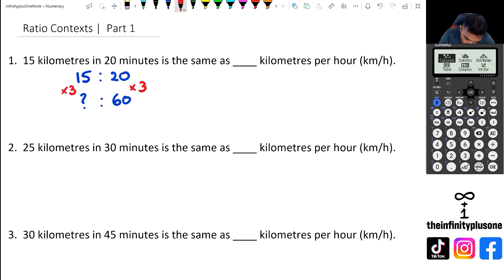So that means I've got to do 15 times 3. And when I do this, I am going to end up with 45. So the actual answer for this question is going to be 45 kilometers per hour.